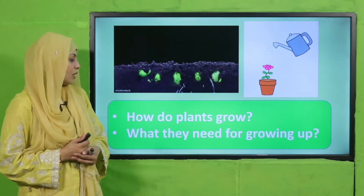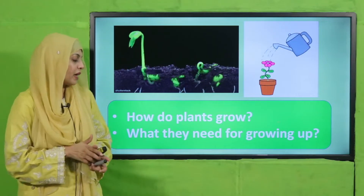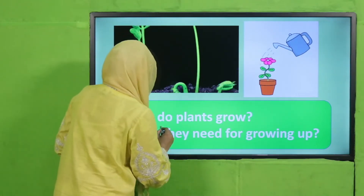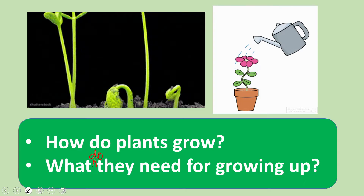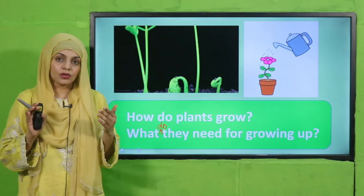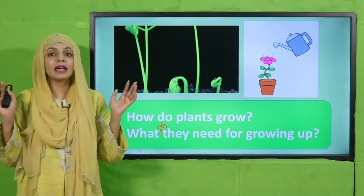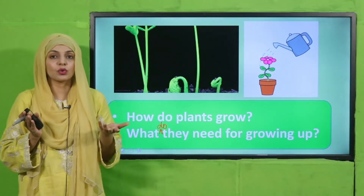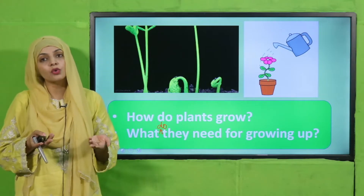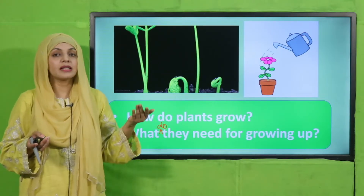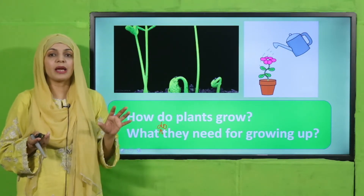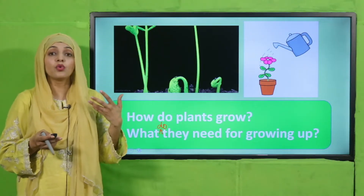Now tell me what do they need for growing up. Plants ko grow karne ke liye kin cheezon ki zaroorat hoti hai? Jab hum zameen mein beej lagate hain, to hum sab se pehle isko kya dete hain? Pani dete hain. Iske alawa, hum isko aisi jagah pe lagate hain jahaan dhoop ho, to usko sunlight ki zaroorat hoti hai. Iske alawa, hamare ird-gird har jandar ko hawa ki zaroorat hoti hai, to paudhon ko bhi hawa ki zaroorat hoti hai. So air, water and sunlight — yeh bahut important cheezein hain plant ke liye to grow up and to grow well.